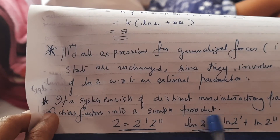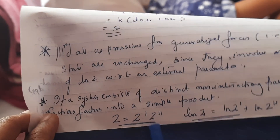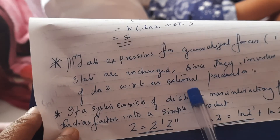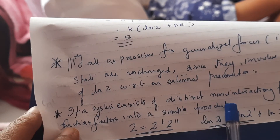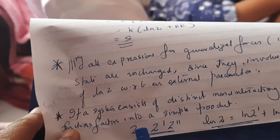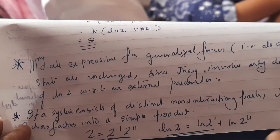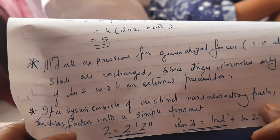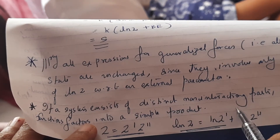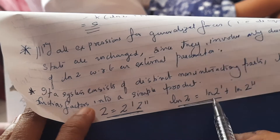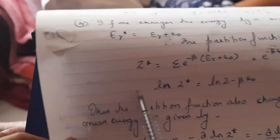If a system consists of distinct non-interacting parts, the partition function factors into a simple product. If a system is made out of subsystems A' and A'', both non-interacting, and you consider them together as one system, then the total partition function is just the product of their individual partition functions. If you take the logarithm, ln Z equals ln Z' plus ln Z''. The derivation is in the textbook; the key fact to remember is that partition functions multiply for non-interacting subsystems.